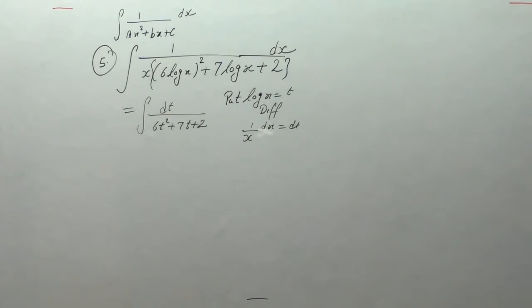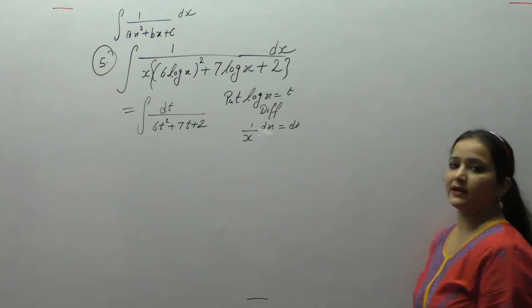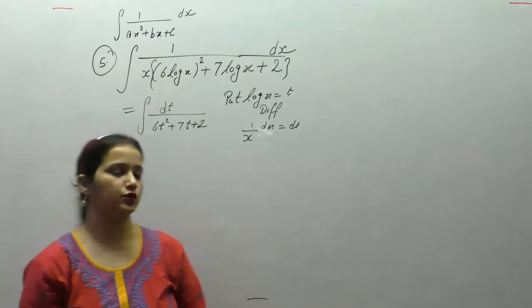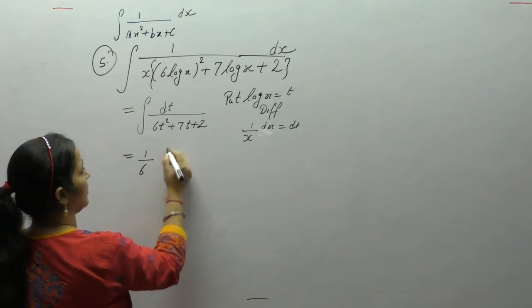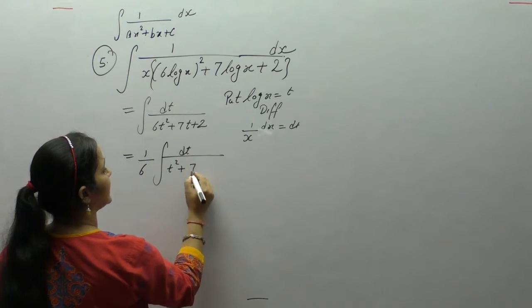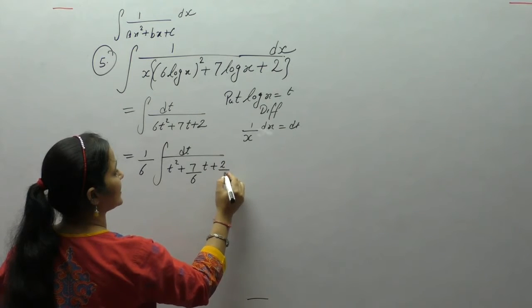We have 6t² + 7t + 2. Now we will apply the completing the square method. First, make the coefficient of t² unity — divide by 6, take 6 common — giving t² + (7/6)t + 2/6.